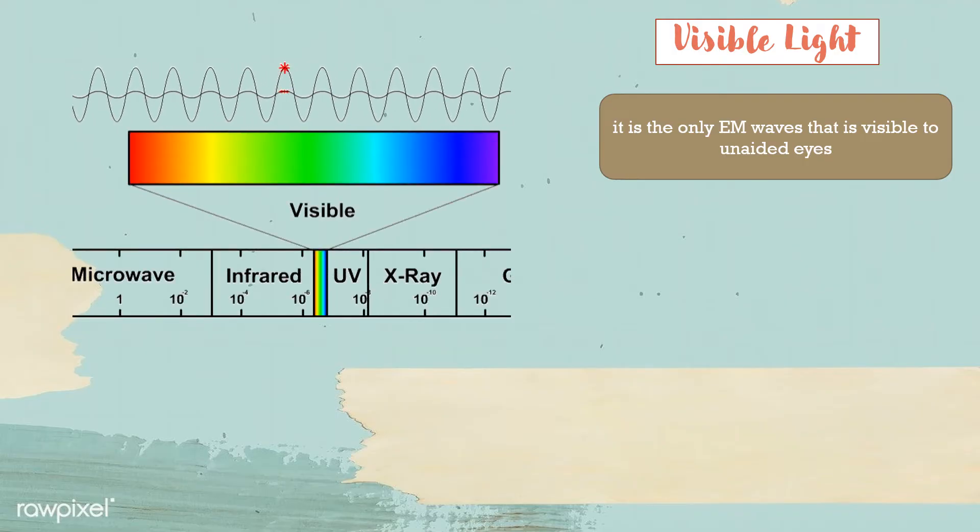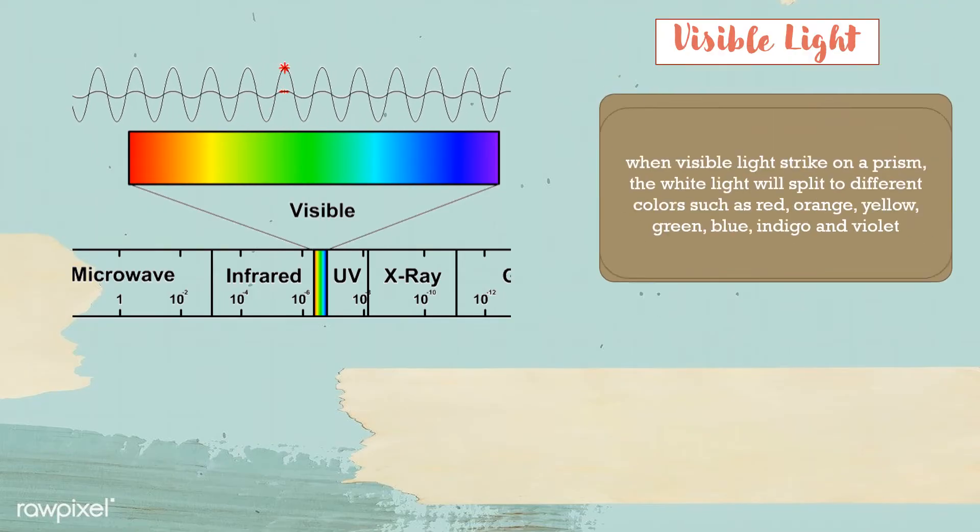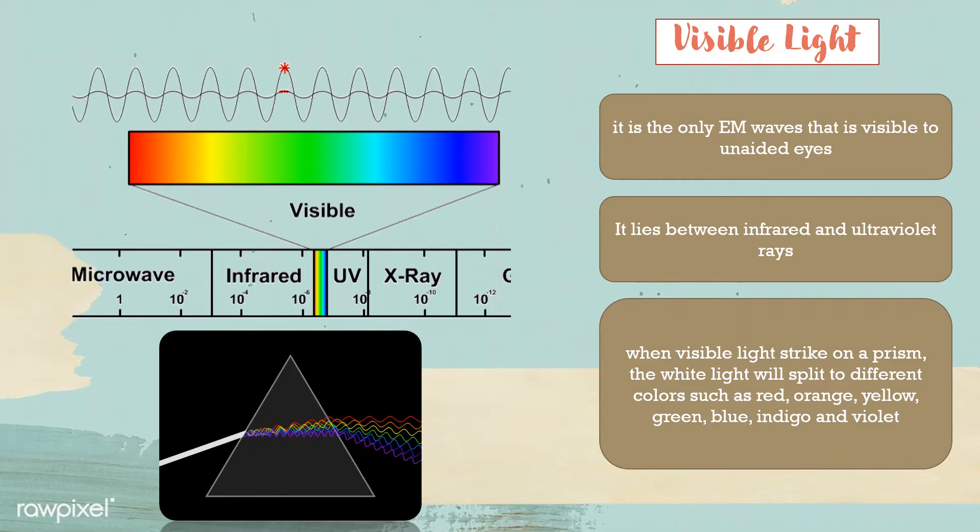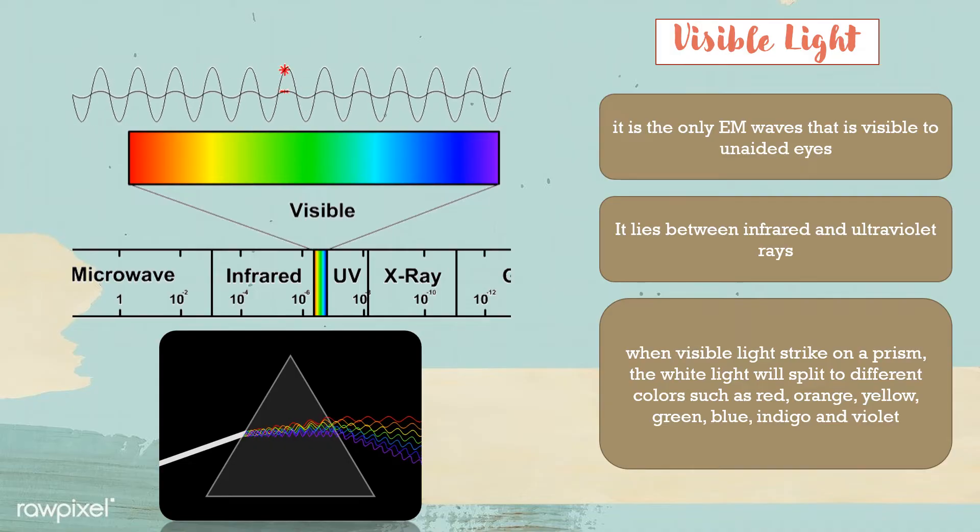Next is visible light. It is the only EM waves that is visible to unaided eyes. It lies between infrared and ultraviolet rays. When visible light strikes on a prism, the white light will split into different colors such as red, orange, yellow, green, blue, indigo, and violet.